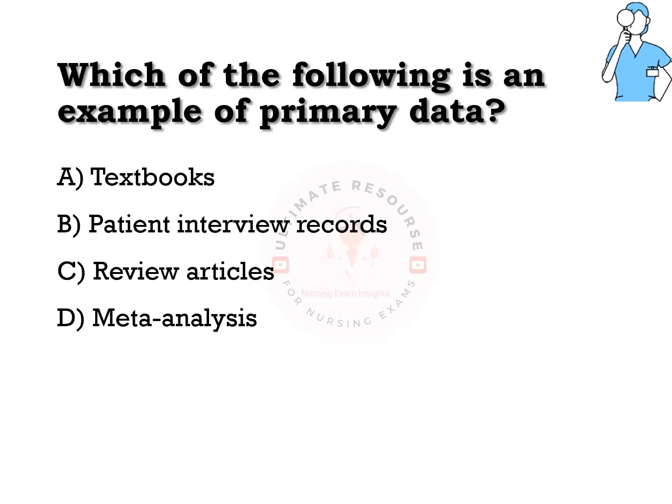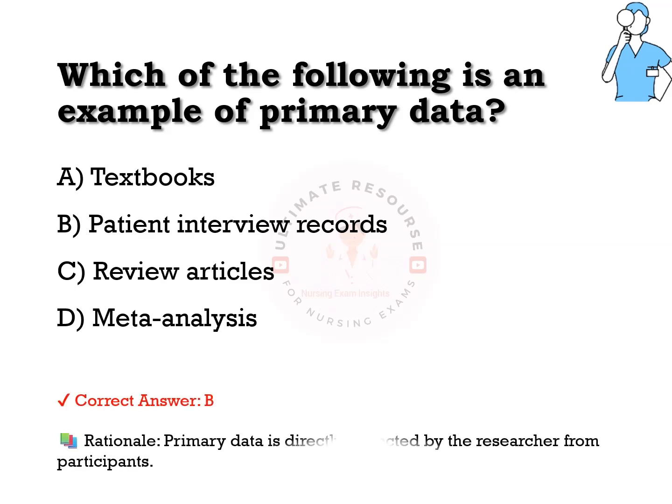Which of the following is an example of primary data? Options are a) textbooks, b) patient interview records, c) review articles, d) meta-analysis. The answer is b) patient interview records. Primary data is directly collected by the researcher from the participants.